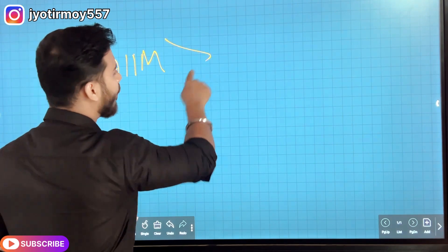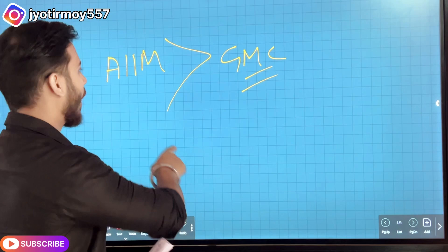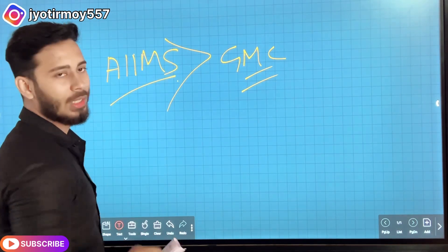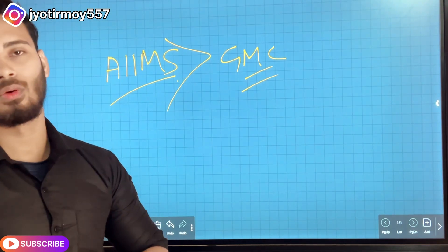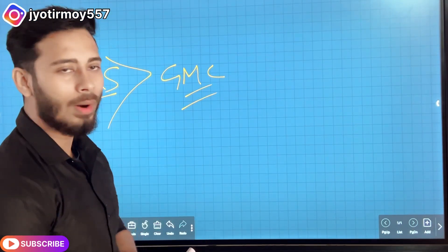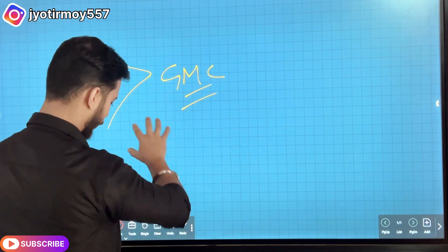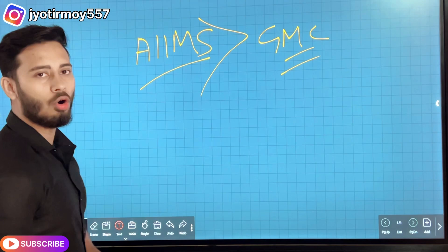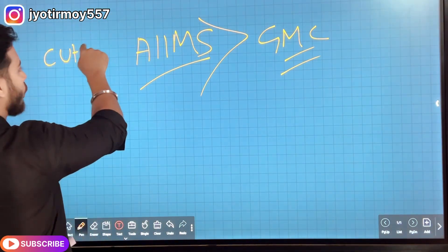AIIMS cutoff is higher than GMC. AIIMS cutoff is high because it has a reputation. We know that this is the best medical policy for AIIMS. That is why AIIMS cutoff is high.